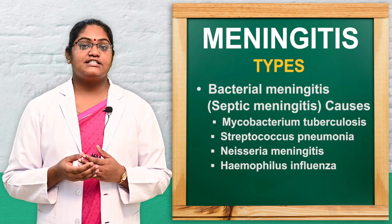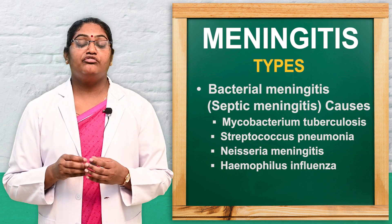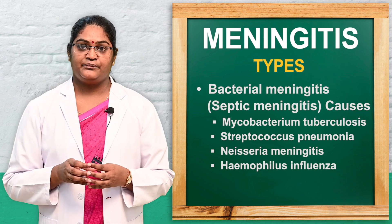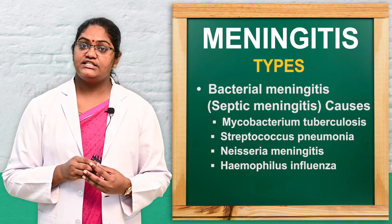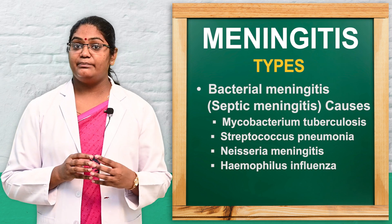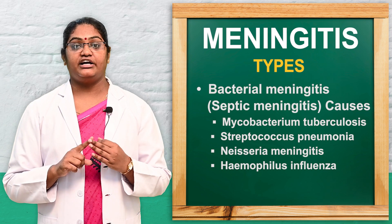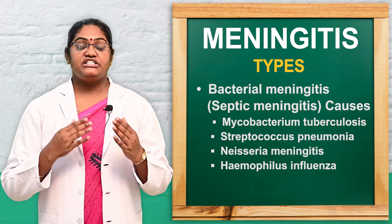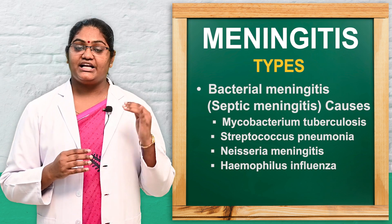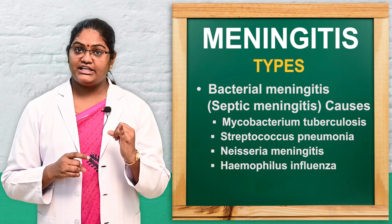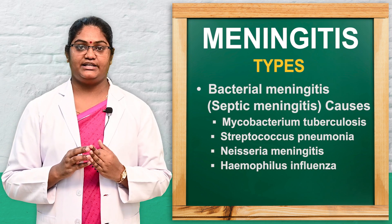Next we will discuss the common types of meningitis. As we discussed in the etiology, meningitis is mainly caused by bacteria, viral, and fungal agents. The major types are divided as per the causes: bacterial meningitis, viral meningitis, and fungal meningitis.